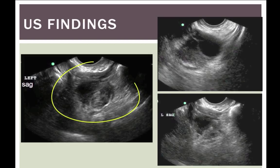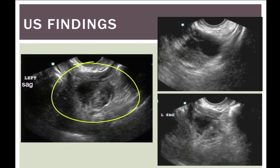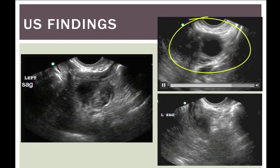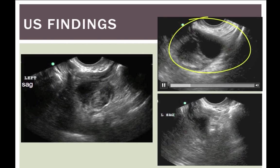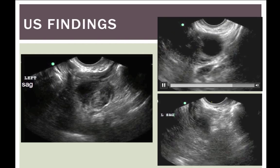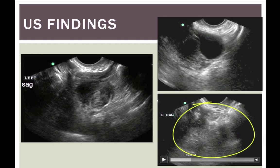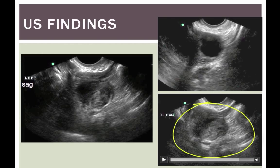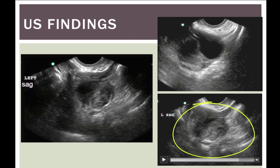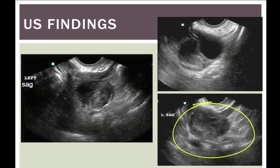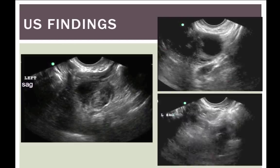Then we get views of the adnexa. This is over on the left, and what we see here is a complex mass with increased echogenicity. This is part of the adnexa, looks like the left as well. There's a simple cyst and some increased echogenicity here. And this is just another sweep through that thing - it looks like we've got an increased echogenic mass in the left adnexa and some cystic material as well. This is all concerning for ectopic pregnancy.